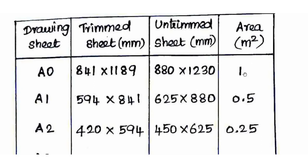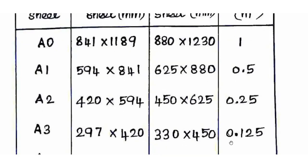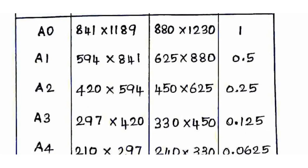The A1 sheet is half of A0, so its area is 0.5 m². The A2 sheet area is 0.25 m². The A3 sheet area is 0.125 m². The A4 sheet area is approximately 0.0625 m². Each subsequent sheet is half the area of the previous one, with dimensions halved in width and length.